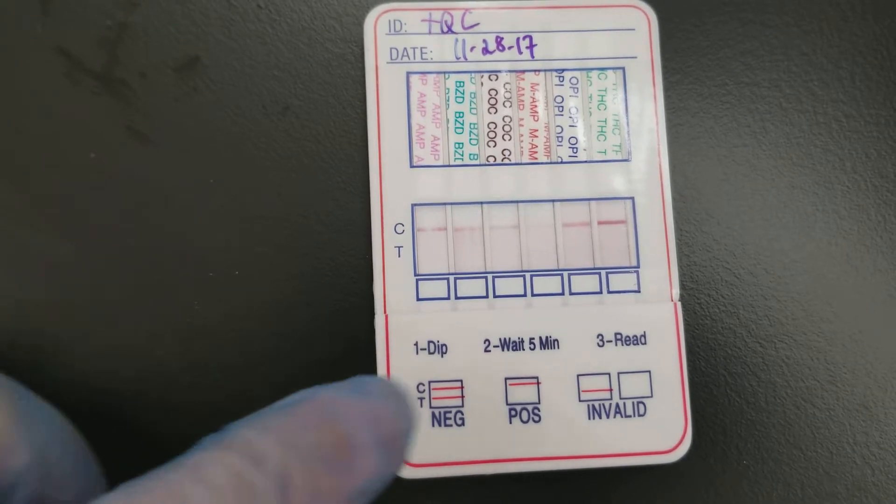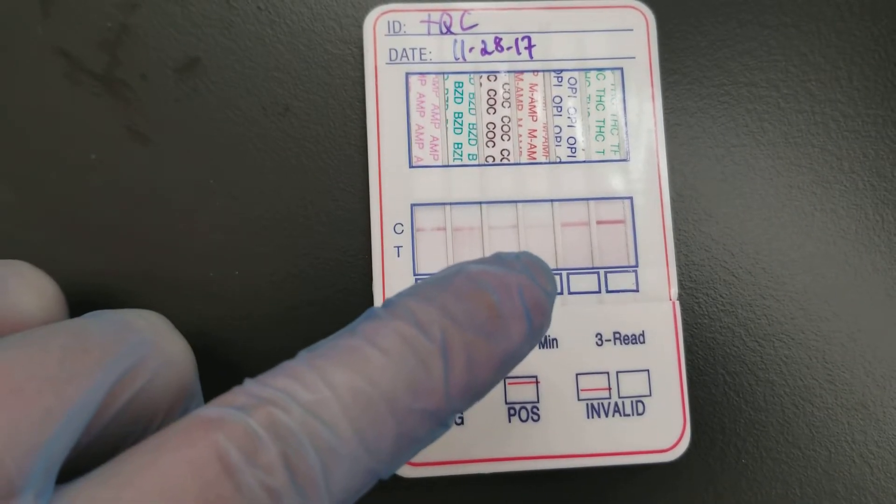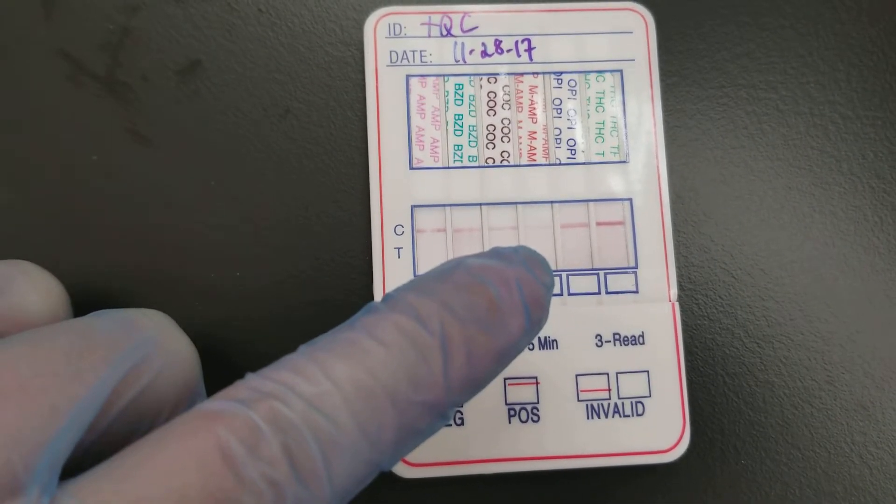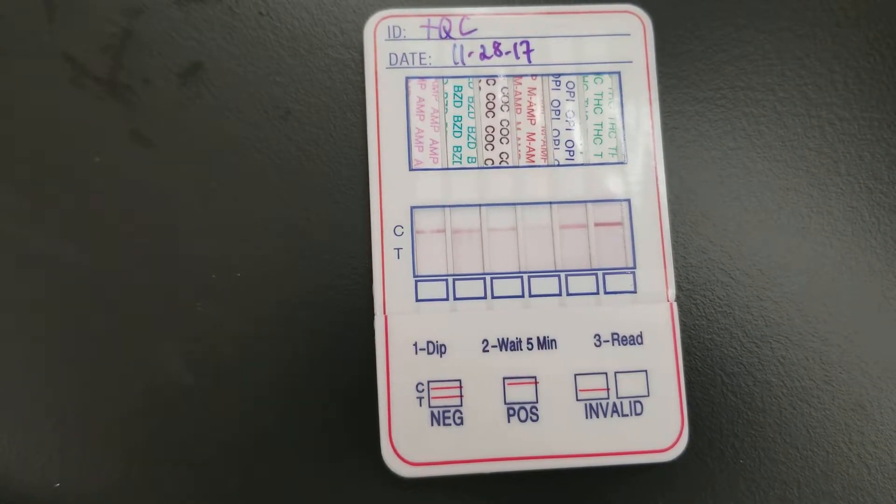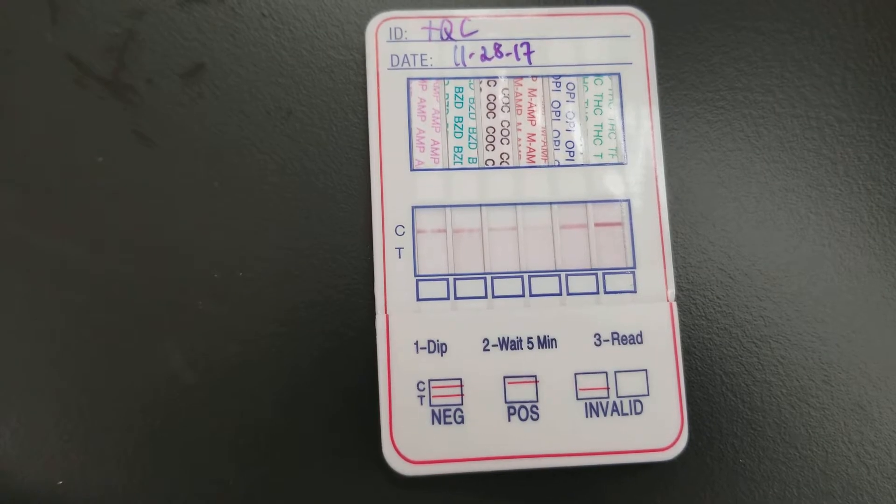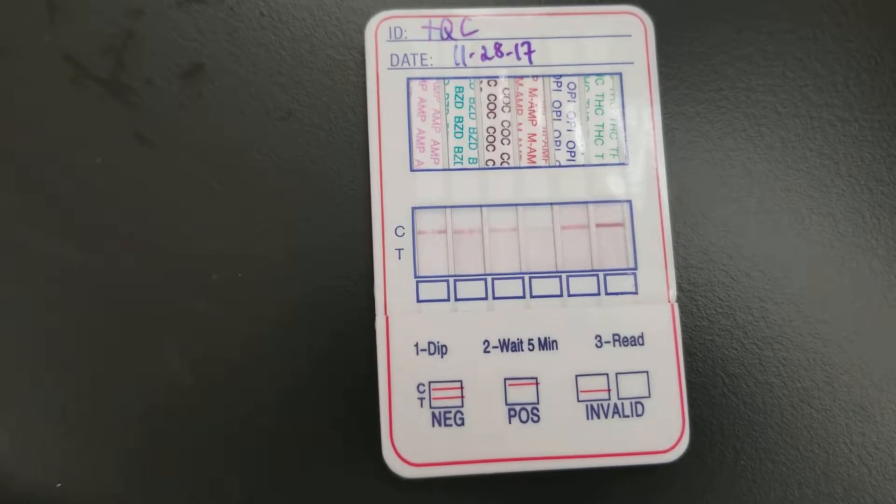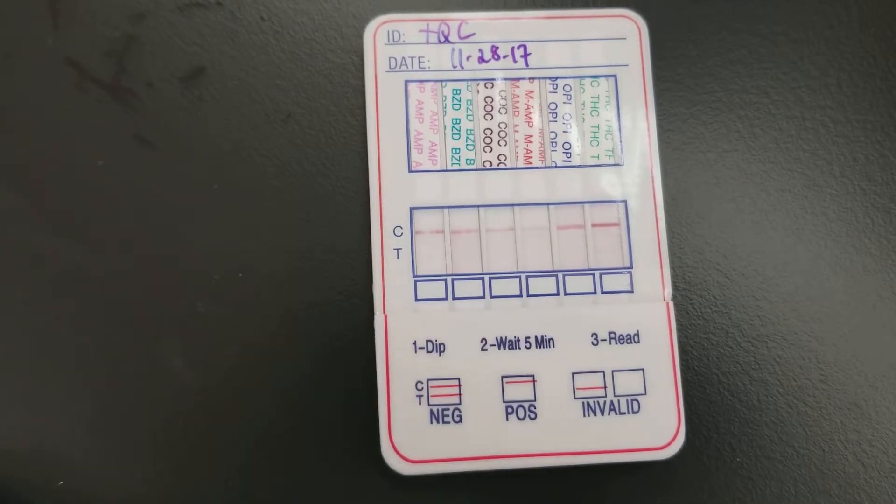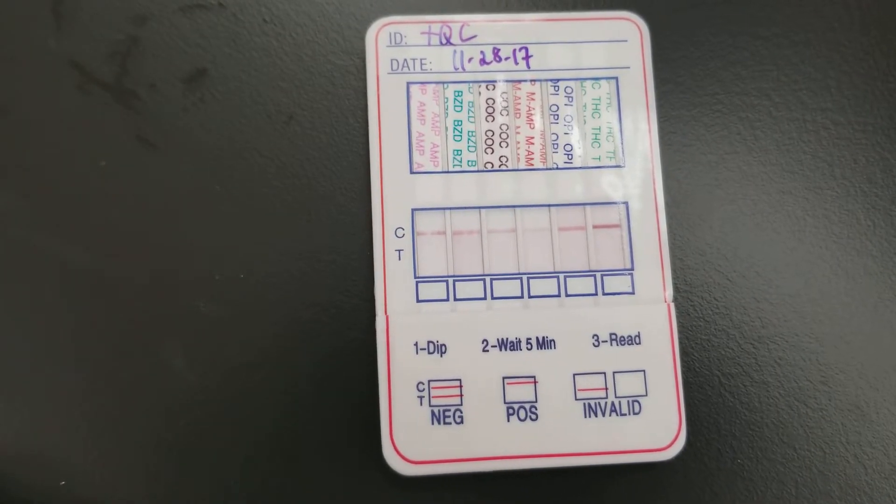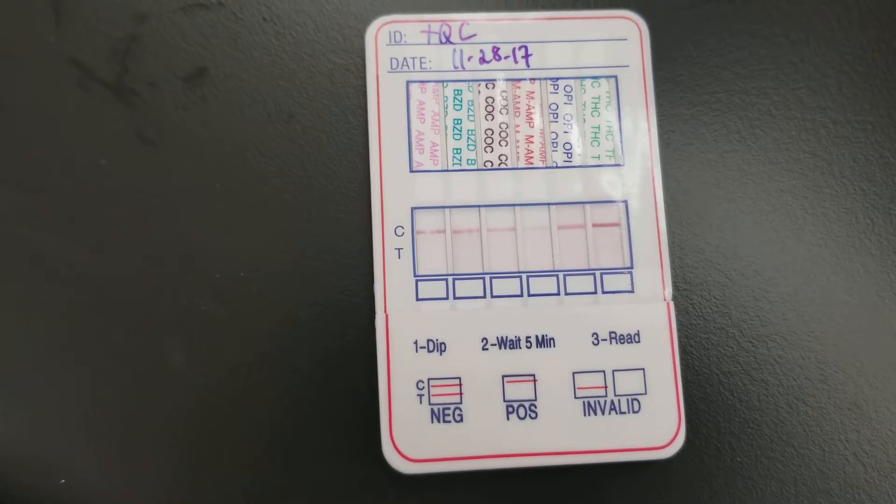See the fourth one over, the amphetamine methamphetamine, is going to be positive. It has a faint line right now, but when you can see a faint line like that, it still means that the line is present. So in that case, it would be positive.